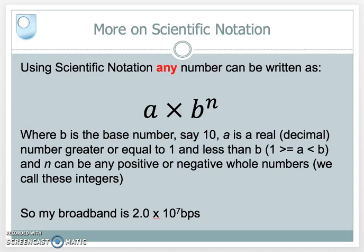So B is the base value. A is a real number, a decimal number. But the number to the left of the decimal point must be greater or equal to 1 but less than B, where B is the base. In the previous example, 10 was the base. So A can be any number from 1 up to a number less than 10, which is 9.